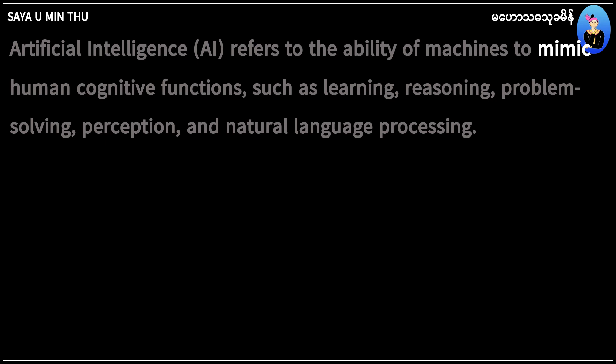In this example, proposition 2 is 'to plus infinitive.' You can use 'mimic' as the infinitive — as verb 1. You can use MIMIC.